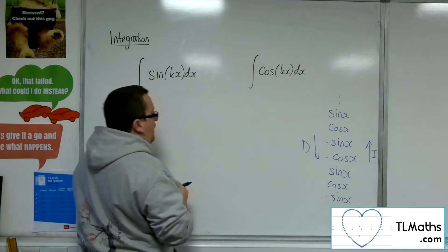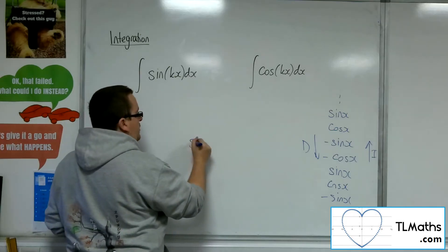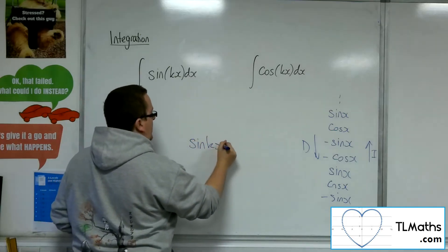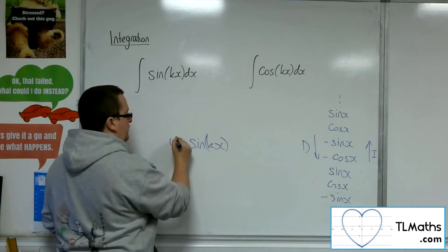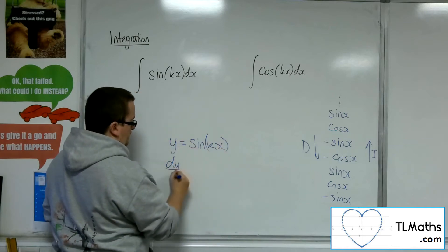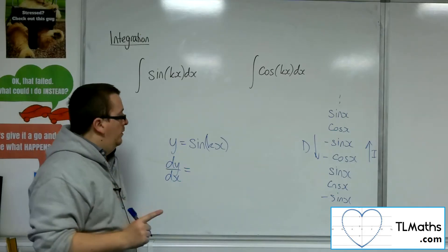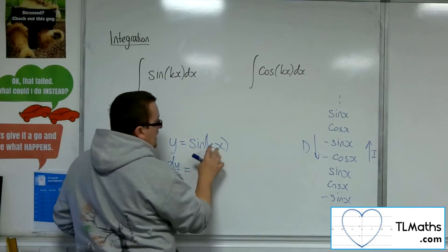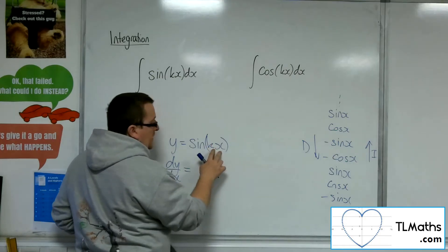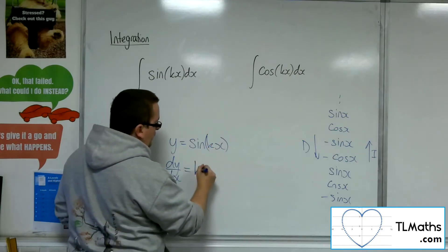Now, if I need to differentiate sine of kx, for example, then I know via the chain rule that the coefficient of the x, the k, comes out the front.